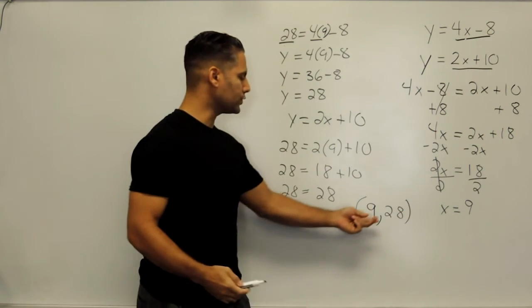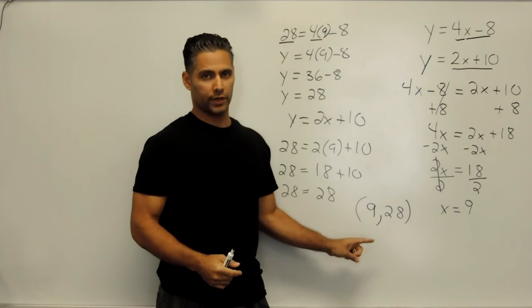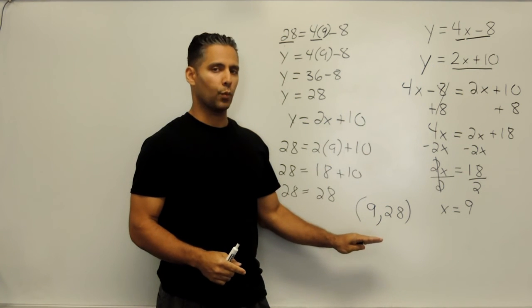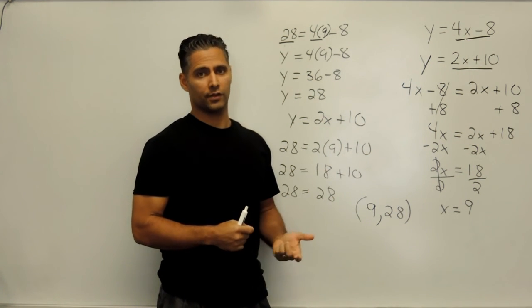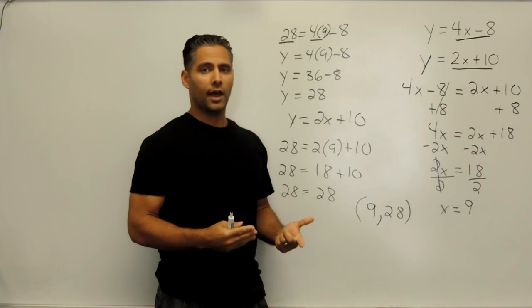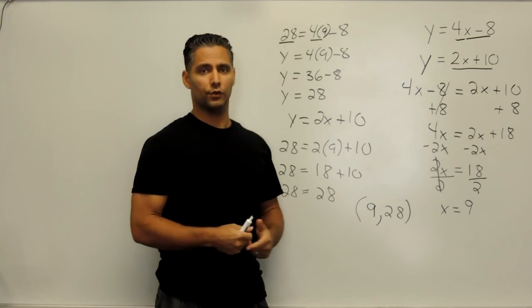Now, what this solution really is, is a set of coordinates. These coordinates tell us where the two lines would intersect if we were to graph those two lines on the coordinate plane. And this is how you solve a system of equations using substitution.